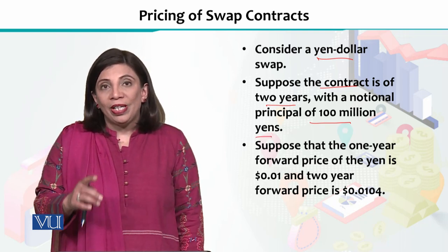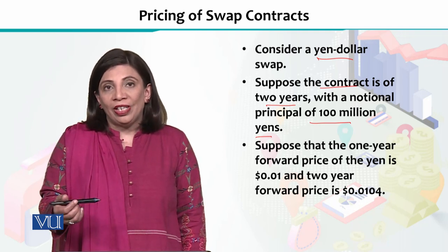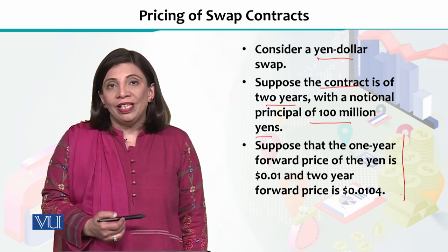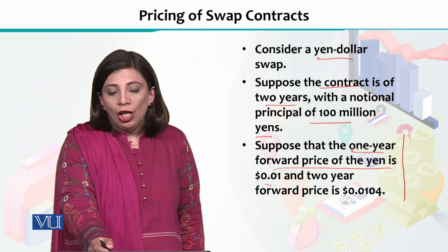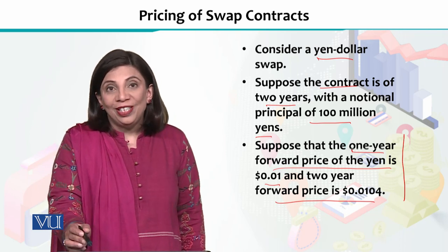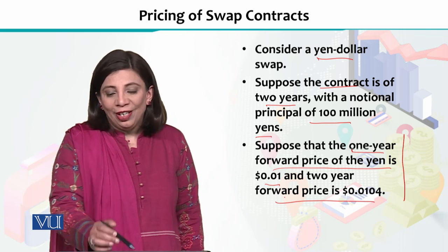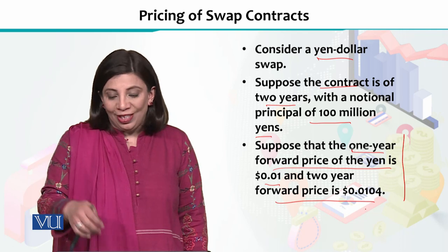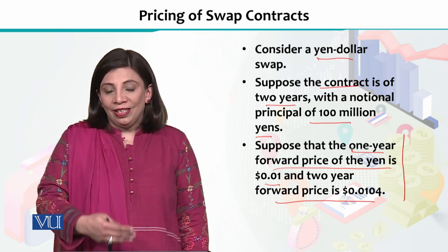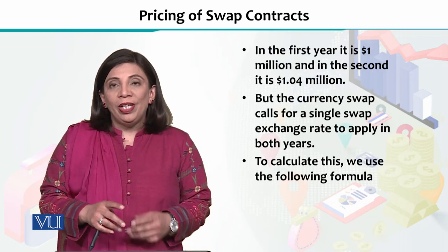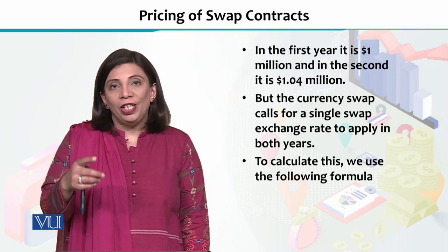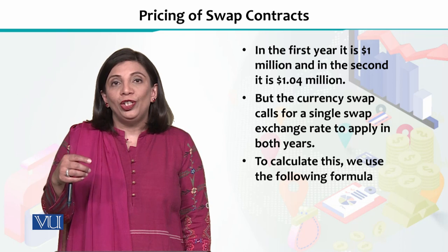The notional principal is 100 million yen. We have to account for 100 million yen's transaction, dealing in dollars. When we look at the exchange rate in the market, the 1-year forward price of the yen is $0.01, and the 2-year forward price is $0.0104. There is a slight increase in the price of the yen. In the first year, you will get 1 million dollars, and after 2 years, the value will be $1.04 million dollars.